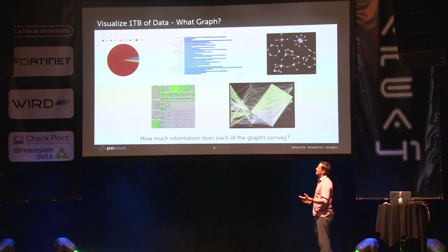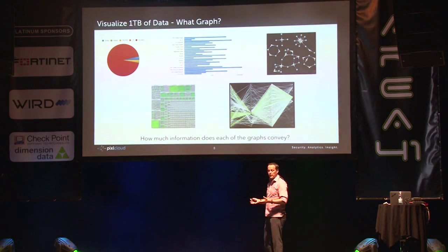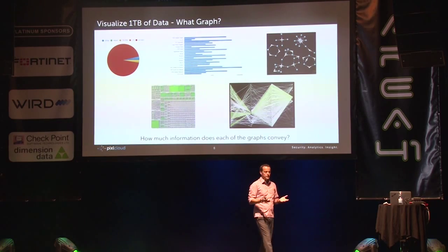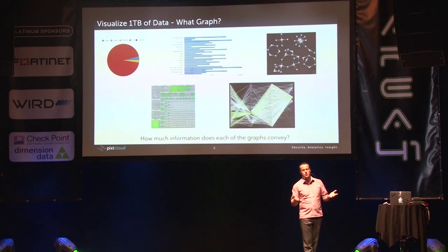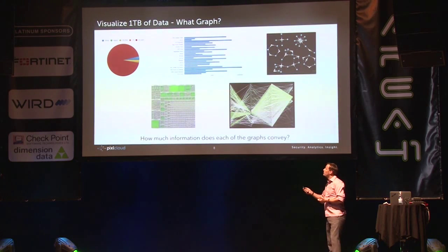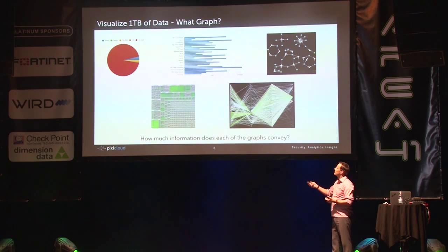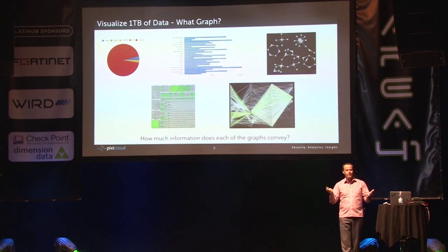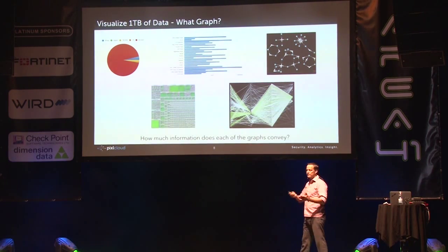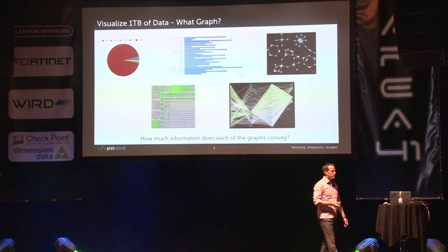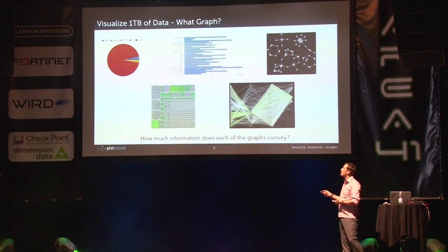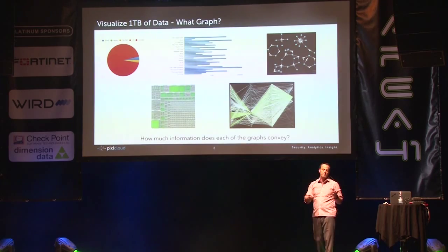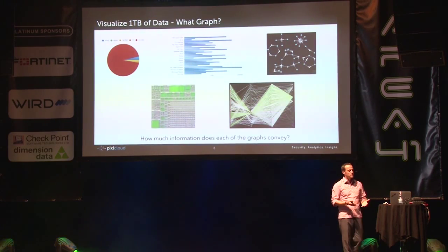Let's start at the basics. We can take different types of visualization to present our data. Starting top left: a pie chart — I'm taking a firewall log, breaking up different event names into slices of the pie chart, and I don't see very much. Moving on to bar charts — I show a distribution of all my event names. Maybe I can see some events showing up a lot and others don't. But again, not that much information is conveyed.